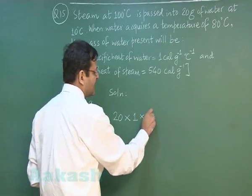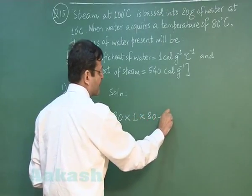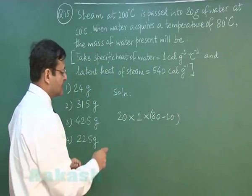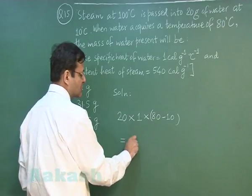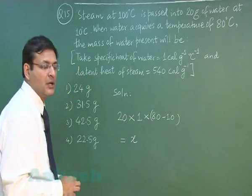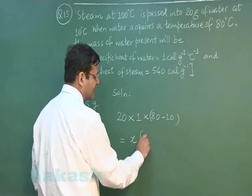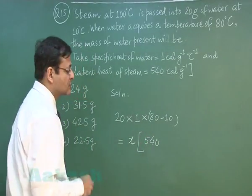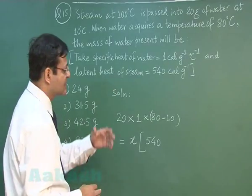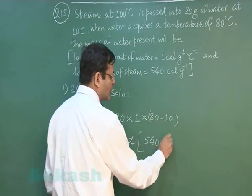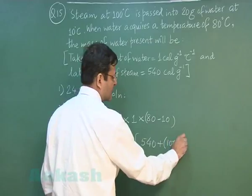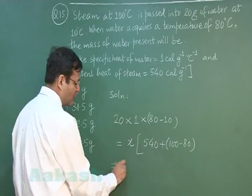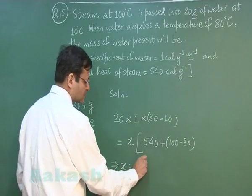So naturally 80 minus 10, this is the gain, this is the total amount of heat gain in water and this is being passed by steam. Let us suppose x gram steam has been used. So first steam will be losing its latent heat and then once it has become water, so from water at 100 degree Celsius it will be coming down to 80 degree Celsius. If you solve this thing then you see the value of x will come out to be 2.5 gram.